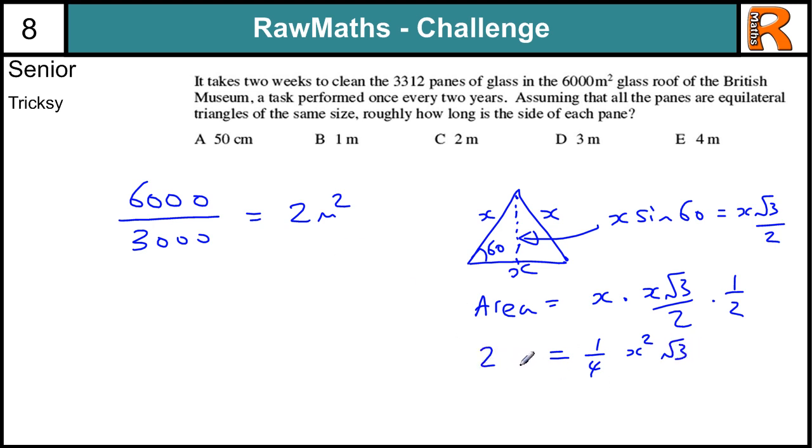Now that's going to be equal to 2 meters squared. So if I divide by a quarter or times by 4, I get 8 is equal to x squared root 3. So that implies that x squared is 8 over root 3. Now root 3 is somewhere between 1 and 2. It's quite close to 2 though. So if we call it 2 and do 8 divided by that, we get 4.